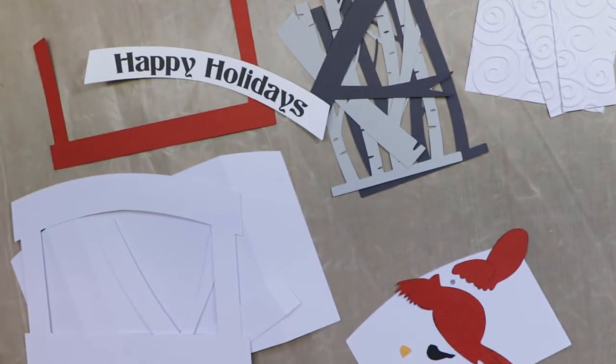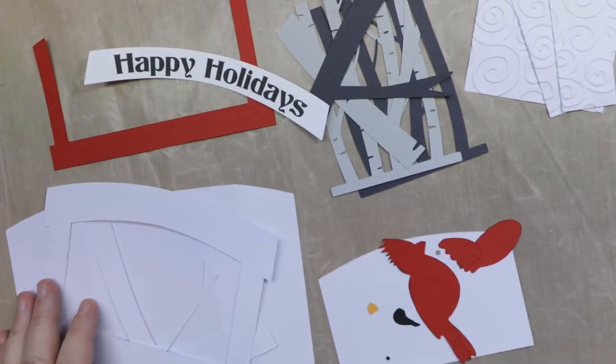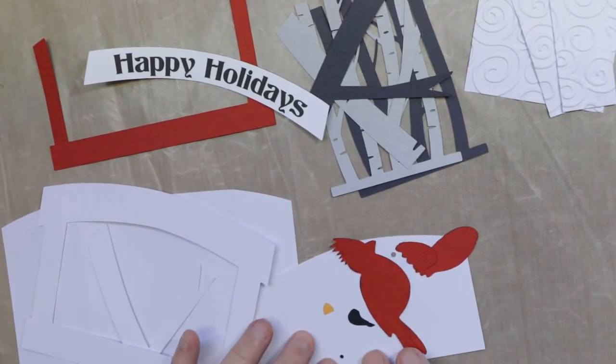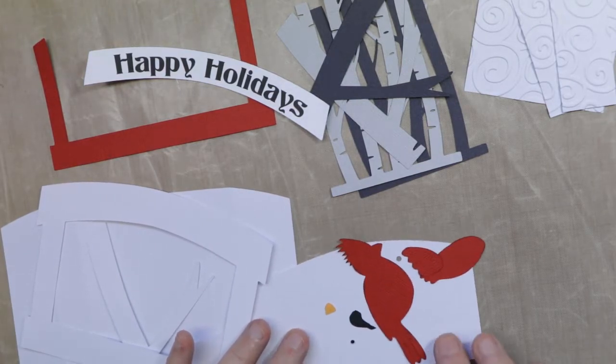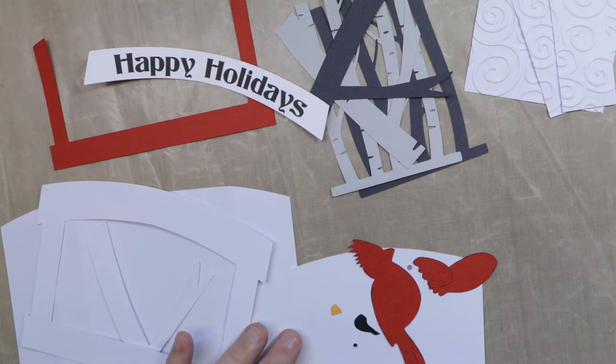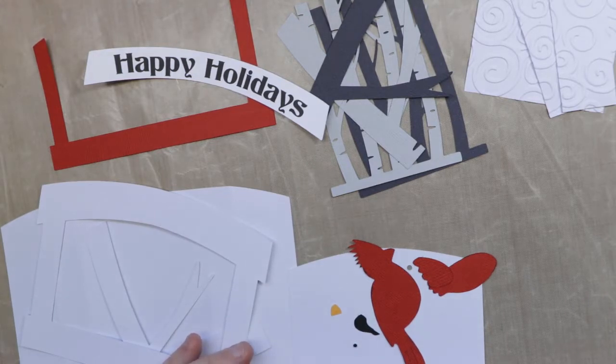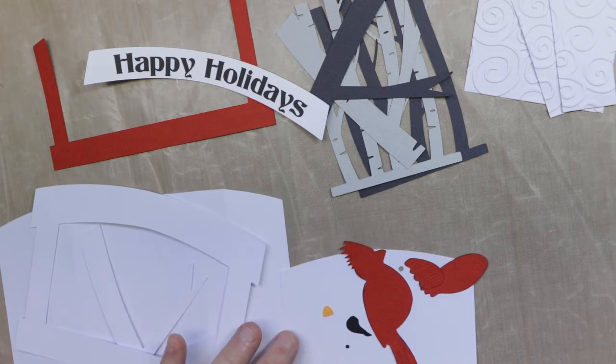And then I'm going to put that aside, and then here's the card pieces and the pieces for the cardinal. So because it was so small, there's a little white piece and a black piece for the eye.